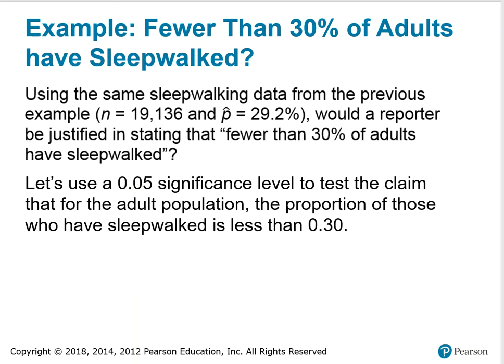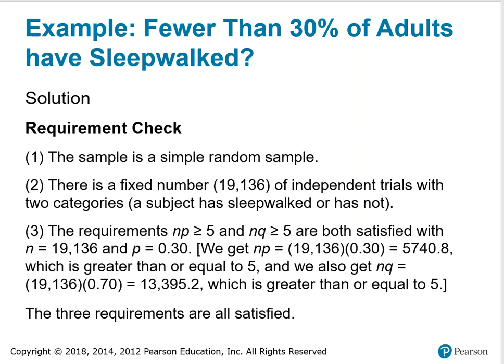New example: would a reporter be justified in stating that fewer than 30% of adults have sleepwalked? Using the same sleepwalking data where n equals 19,136 and p-hat is 29.2%, we use a 0.05 significance level to test the claim that the proportion of adults who have sleepwalked is less than 0.30. Requirements check: the sample appears to be a simple random sample, fixed number of trials 19,136, independent trials with two categories — sleepwalked or did not — and the normal approximation requirements are satisfied.